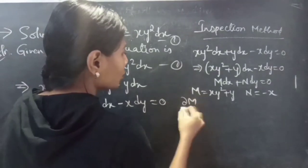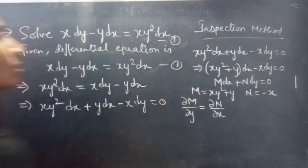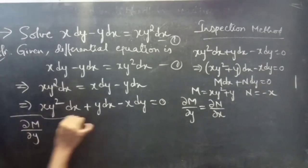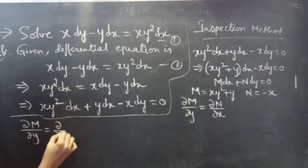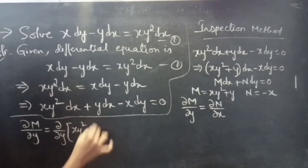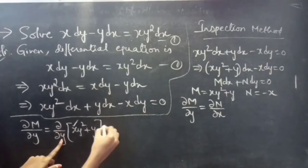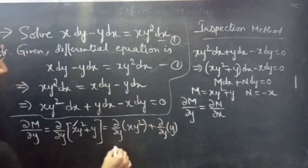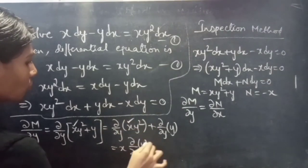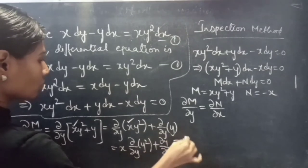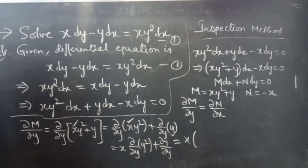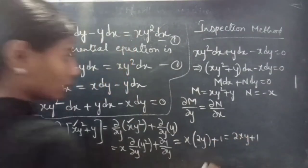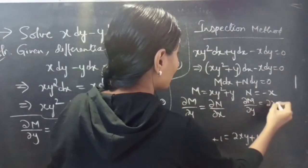If ∂M/∂y equals ∂N/∂x, then the equation is exact. Let's check. ∂M/∂y equals ∂/∂y of (x y squared plus y). Since we treat x as constant, this equals x · ∂/∂y(y²) + ∂y/∂y, which is x · 2y + 1, giving ∂M/∂y = 2xy + 1.